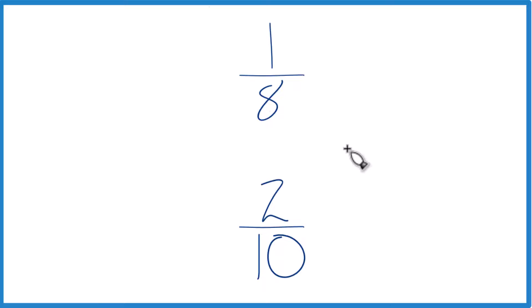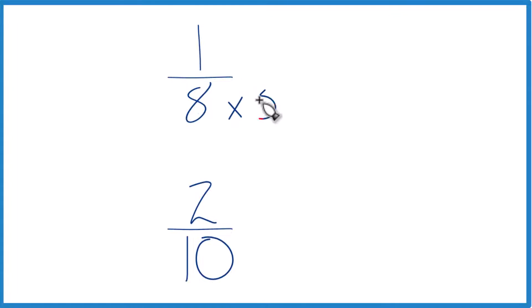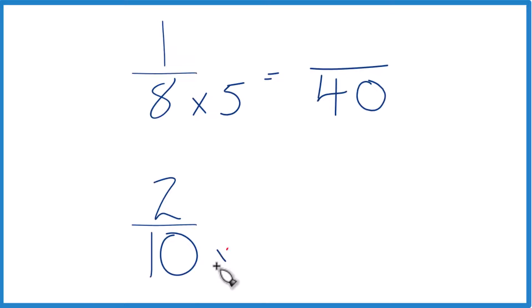So why don't we do this though? Why don't we find a common denominator? I know that 8 times 5 equals 40. And then down here I could have 10 times 4, that would equal 40 as well.